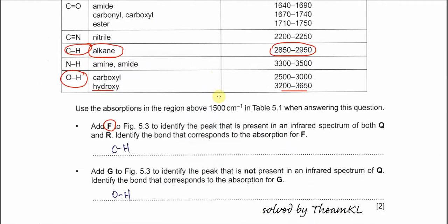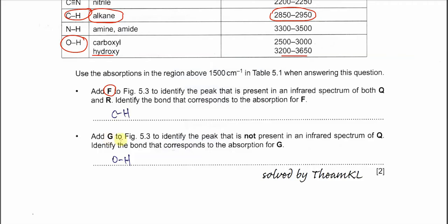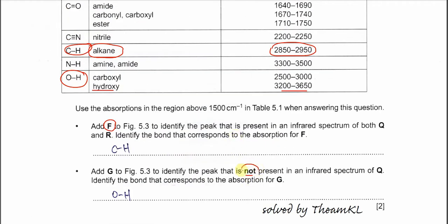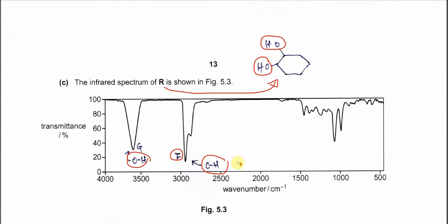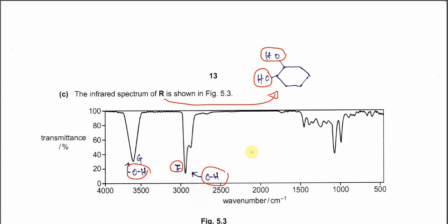Another one is the. Add G to this figure 5.3 to identify the peaks that are not present in the Q. So identify the bond that corresponds to the absorption of G. So for the. Okay because it's not present in Q. Again Q is the halogenoalkane.